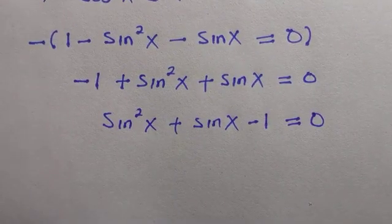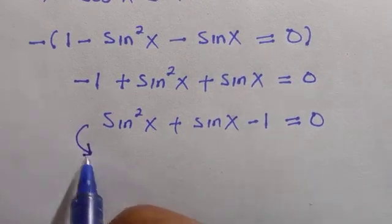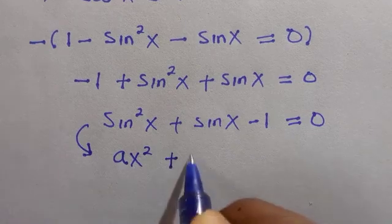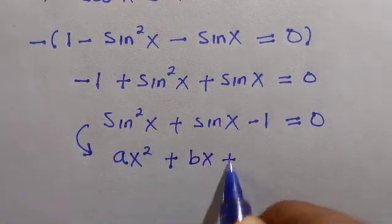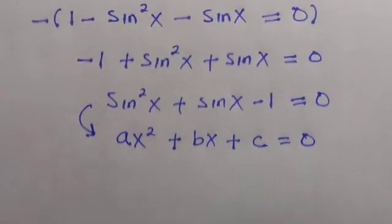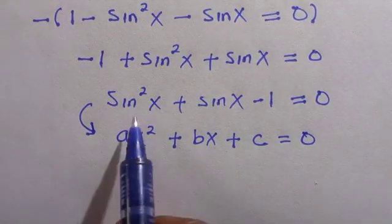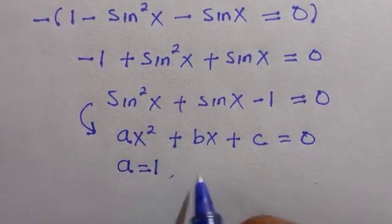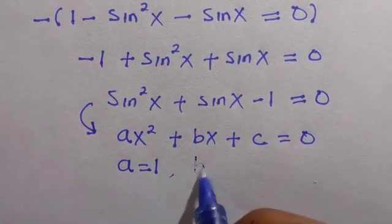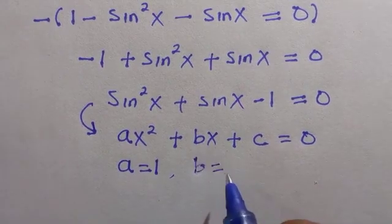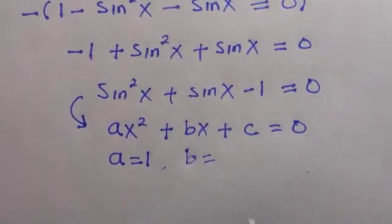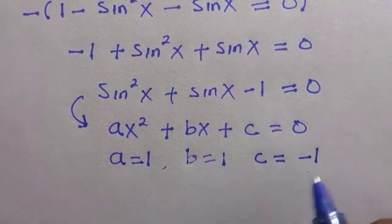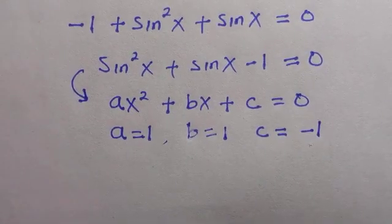We compare this with the standard quadratic equation ax squared plus bx plus c equals 0. Here, sin squared X corresponds to x squared, so the coefficient a equals 1. The coefficient of sin X gives us b equals 1, and the constant term gives us c equals negative 1.